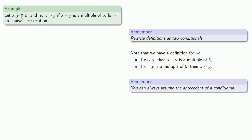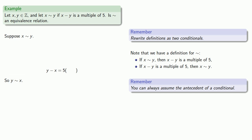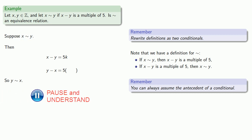We can always assume the antecedent of a conditional. We want to prove squiggle is symmetric, so suppose x squiggle y — we want to conclude y squiggle x. In order to conclude y squiggle x, y minus x must be a multiple of 5. Since x squiggle y, we know x minus y is 5 times something. We can convert x minus y into y minus x by multiplying by negative 1, and a little algebra shows we have 5 times negative k inside. So y squiggle x.